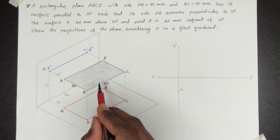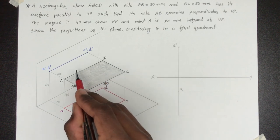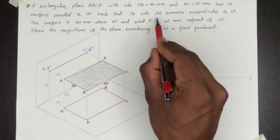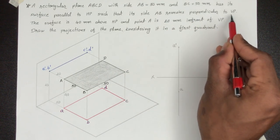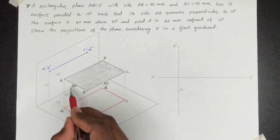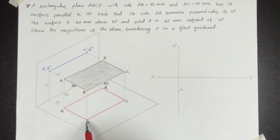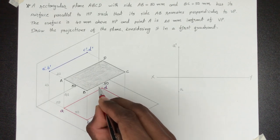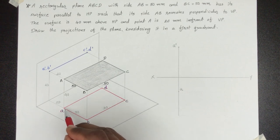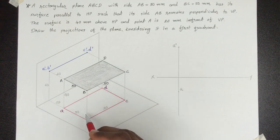Projection of plane के किसी भी question में सबसे पहले हमें plane का true shape draw करना है. यहाँ पे AB is perpendicular to VP, तो AB का top view हमें XY से perpendicular मिलेगा. यह distance होगा 30 mm, और BC = 50 mm तो यह distance होगा 50 mm. Top view में हमें ABCD का true shape मिलेगा, जिसे हम पहले draw करेंगे.